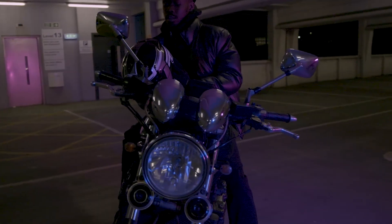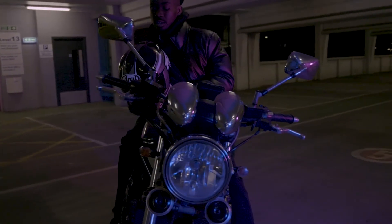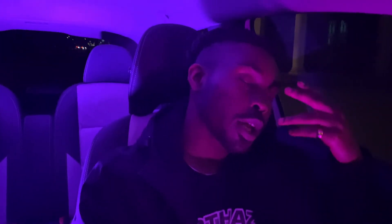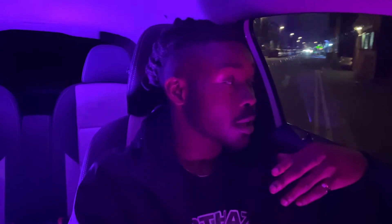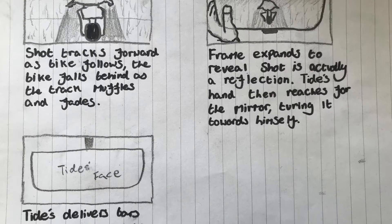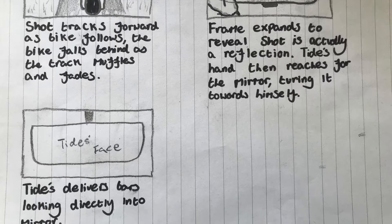If the camera were to follow the cupboard door to reveal the girl sitting on the toilet spitting bars, then we'd both be achieving the same thing. The purpose of my shot is to take Tides from being on the bike — literally fading away — to then reintroduce him in the car with Swish: a jarring yet seamless transition, much like the one from 'Contact.'